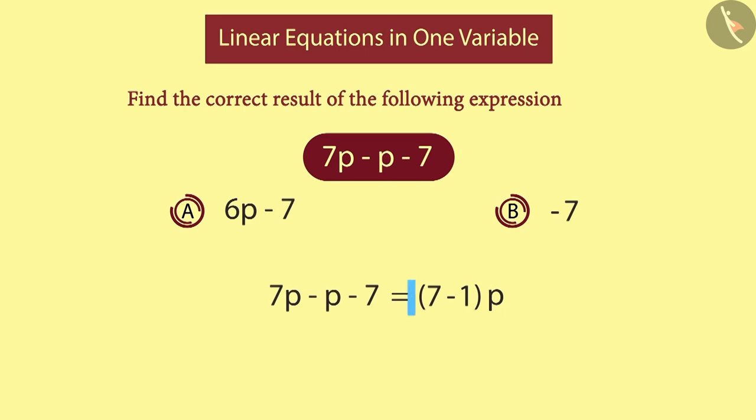So, the correct answer would be 7 minus 1 multiplied by P minus 7, which is 6P minus 7. Because there is no other number in the expression, 7 will remain as it is. Hence, the correct option is A.